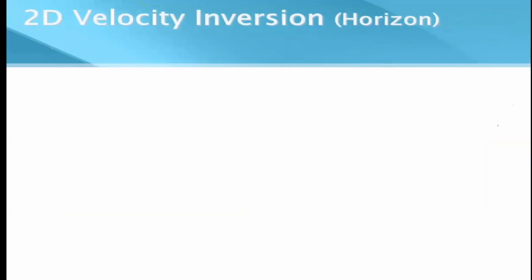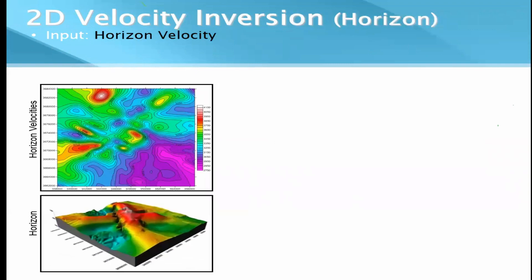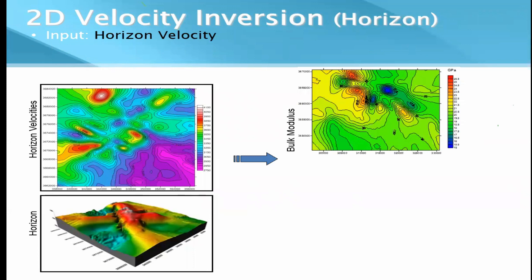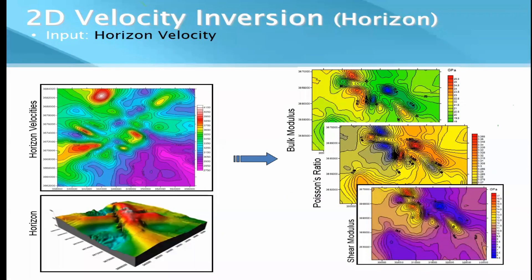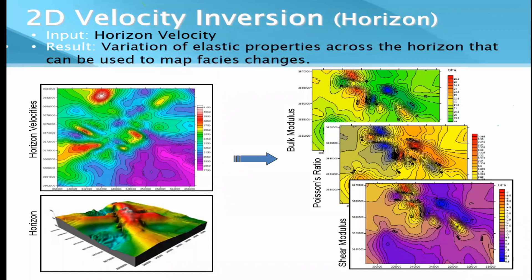We can also have a 2D inversion along a horizon — if we have a velocity control along an interpreted horizon for any interface, we can compute the bulk modulus, Poisson's ratio, and other moduli. This would be a 2D velocity inversion along the horizon. If we have a velocity cube, we can naturally perform a 3D velocity inversion and compute various elastic parameters.